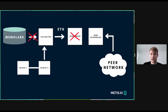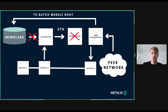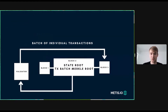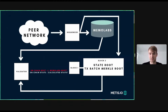Afterwards, a new sequencer comes in, downloads the data from the peer network, and performs the exact same mechanism as the old sequencer: posting the transactions on-chain, the transaction batch Merkle root on-chain, the calculated state, and sending the transaction data to MemoLabs. This is the same mechanism as before.